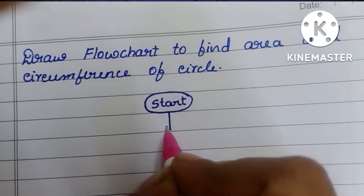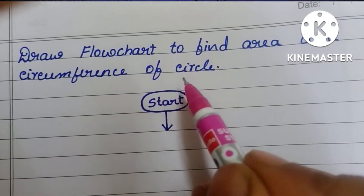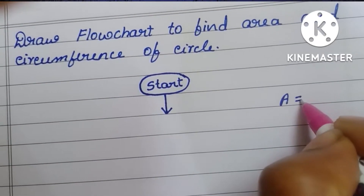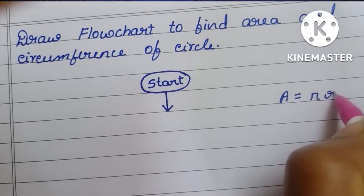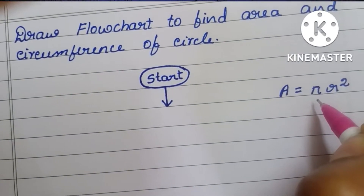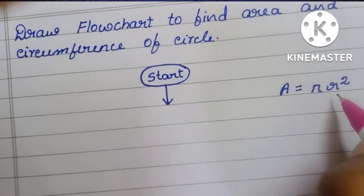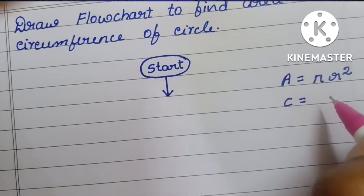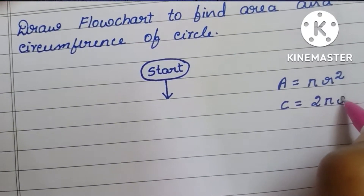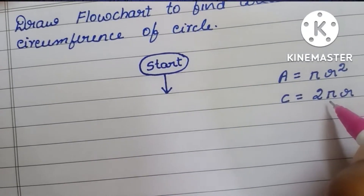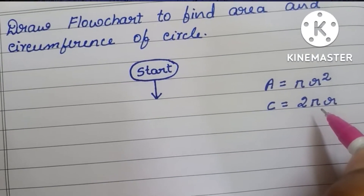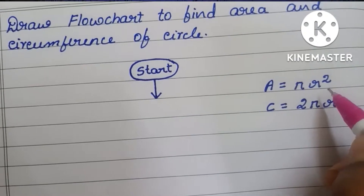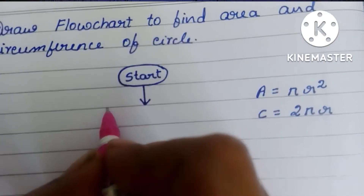Next we have to read the input. To find the area and circumference of a circle: the formula for area is A = pi r squared, where pi is the constant 3.14 and r means radius. To find circumference, the formula is 2 pi r. So the input we need to read is the value of r.